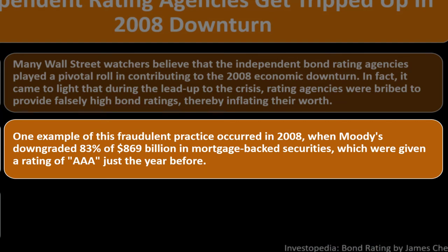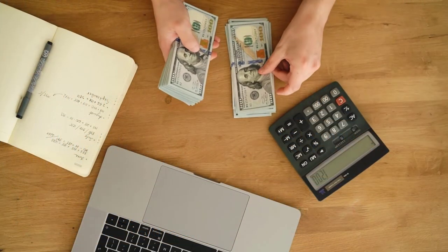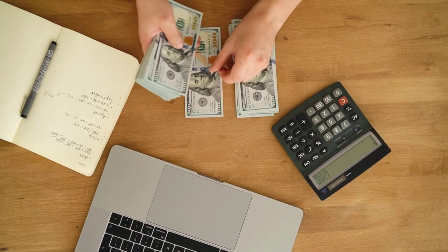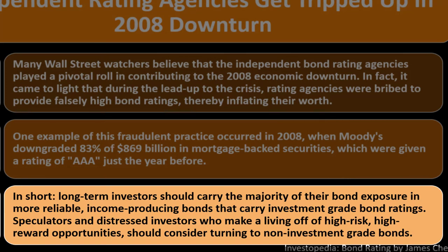One example of this fraudulent practice occurred in 2008 when Moody's downgraded 83% of $869 billion in mortgage-backed securities that had been given a Triple-A rating just the year before. In short, long-term investors should carry the majority of their bond exposure in more reliable, income-producing investment grade bonds. Most investors use bonds to balance out stock risk, so you typically don't want your bonds to be at risk. Speculators and distressed investors who make a living from high-risk, high-reward opportunities should consider non-investment grade bonds.